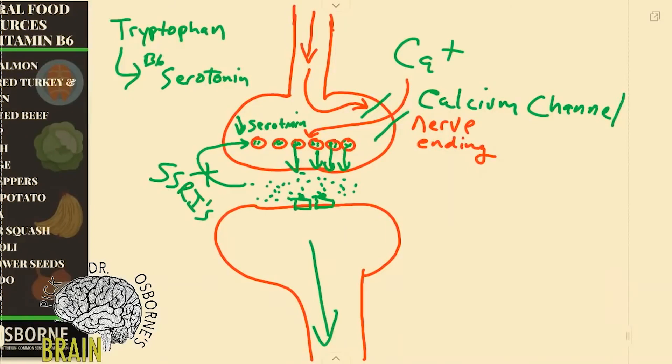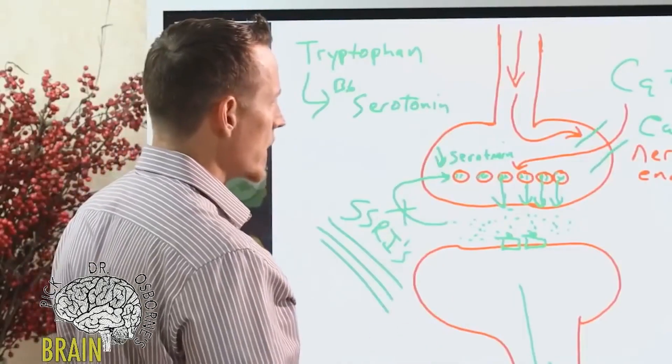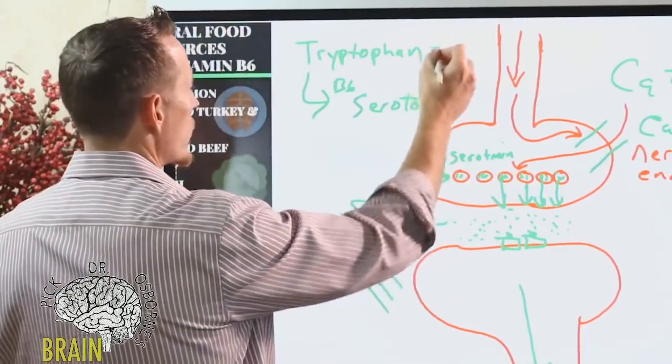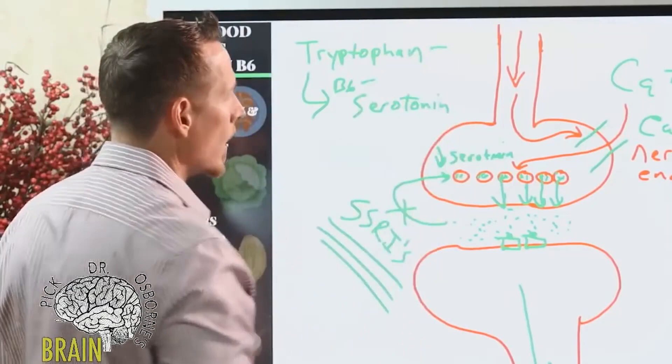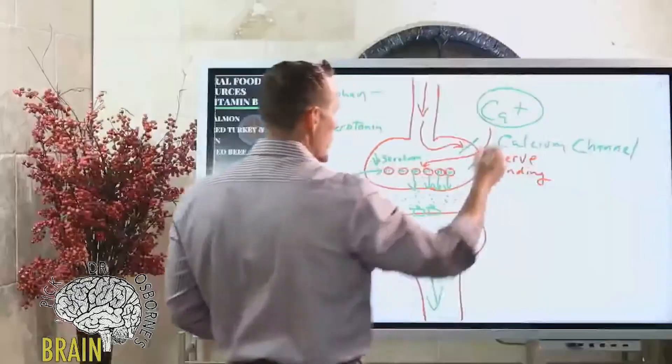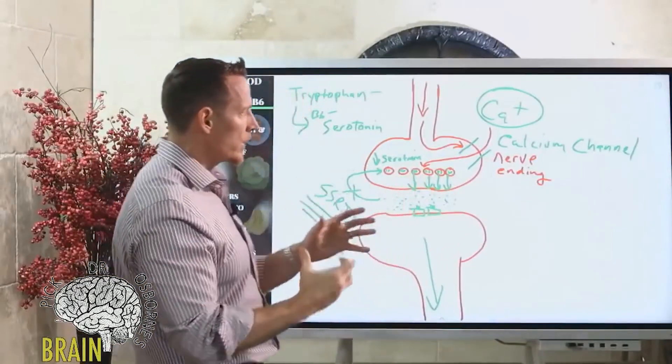And to convert tryptophan to serotonin that requires vitamin B6. So the doctor instead of giving you a medication that preserves the serotonin should be asking a different question: why is your serotonin low? There are a number of things that can be done. Number one they can measure your serotonin level, number two they can measure your tryptophan, they can measure your B6 and they can see whether or not there's a problem here.